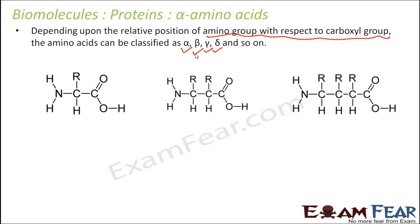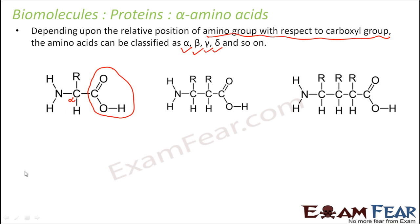Let us see what an alpha amino acid is. Now let us suppose this is your carboxyl group. Wherever you have the carboxyl group, just ignore that carbon atom. The next carbon atom which is attached immediately to the carboxyl group — so here, COOH is your carboxyl group — the carbon directly attached to the carbon of the carboxyl group is the alpha carbon.